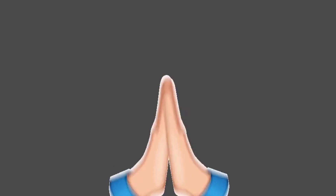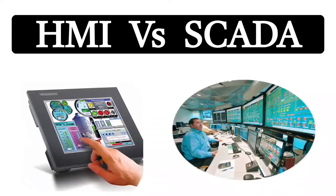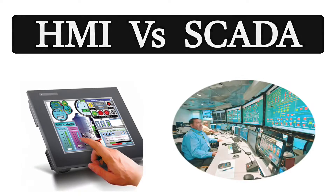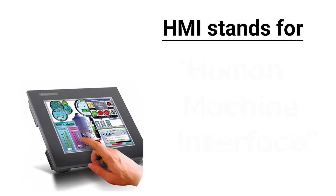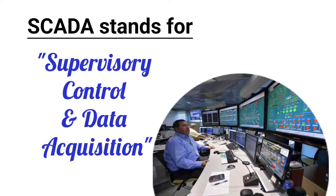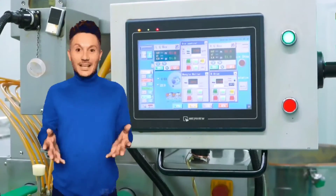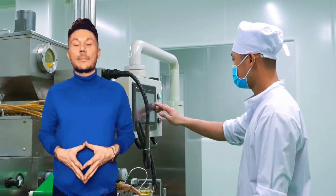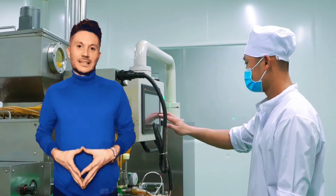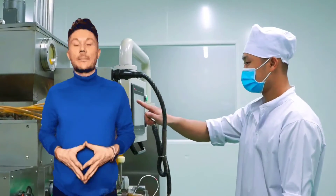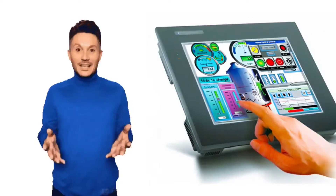Today, we will tell you the main differences between HMI and SCADA. HMI stands for Human Machine Interface, while SCADA stands for Supervisory Control and Data Acquisition. HMI is a kind of screen which shows the operation of the machine and allows the operator to interact with it. Through this, the operator can see the status of the machine and can also control it as necessary.